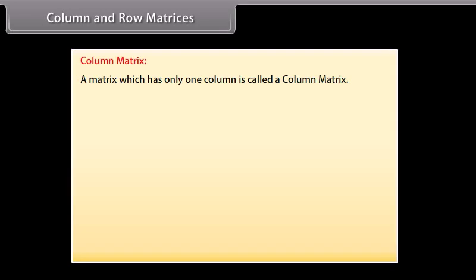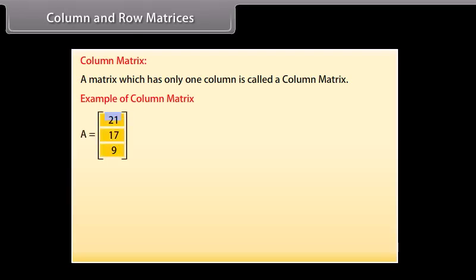Column and row matrices. Column matrix: a matrix which has only one column is called a column matrix. For example, A equals [21, 17, 9] column-wise. This matrix has three rows but only one column, so it is a column matrix. Its order is 3 by 1.